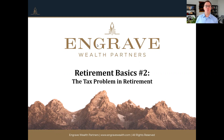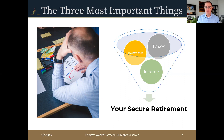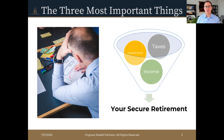Looking specifically at where that problem comes from, it's important to recognize those three most important things. When it comes to planning for your retirement, we want to consider the impact of where your retirement income comes from, how a portfolio can be invested, and very specifically what the tax implications are for each of those two things. When most people look at retirement, they're absolutely forgetting about that third thing — taxes. We want to incorporate tax planning into everything that we do for your retirement.